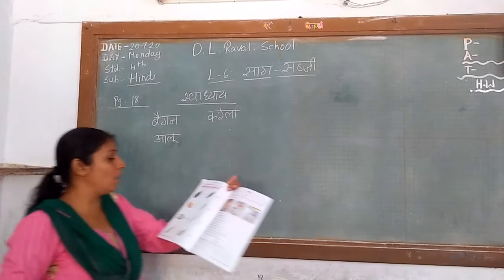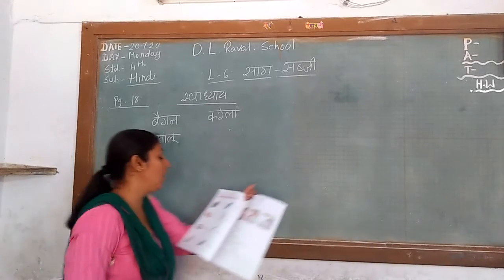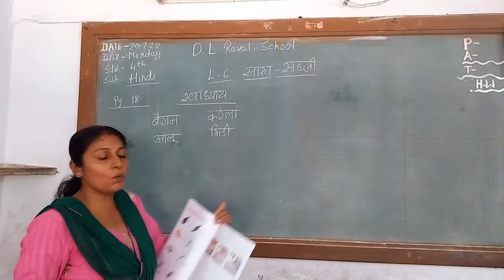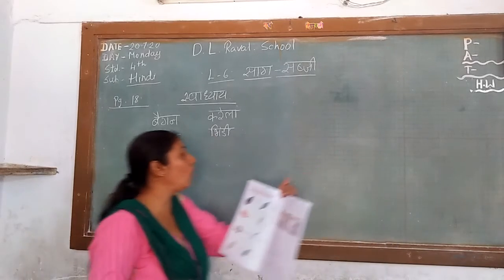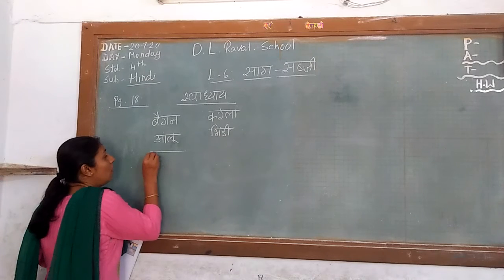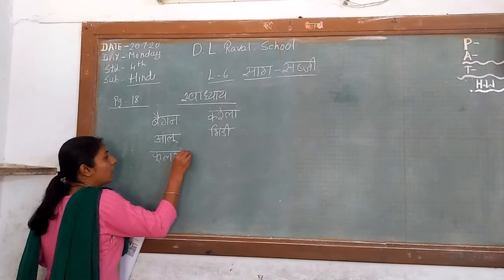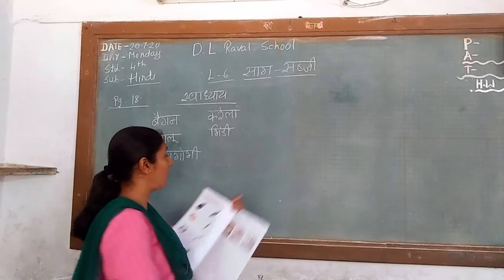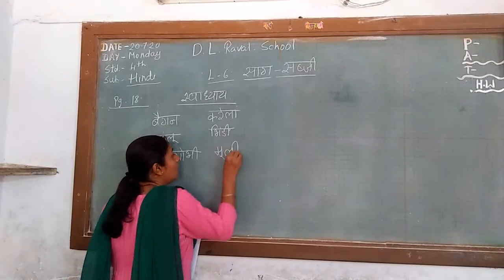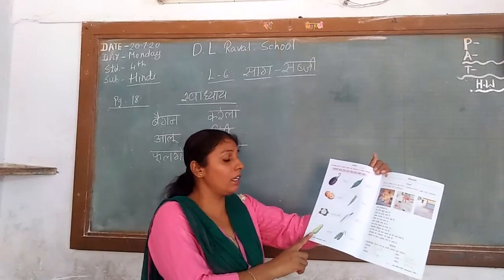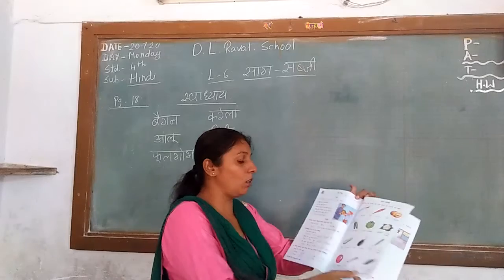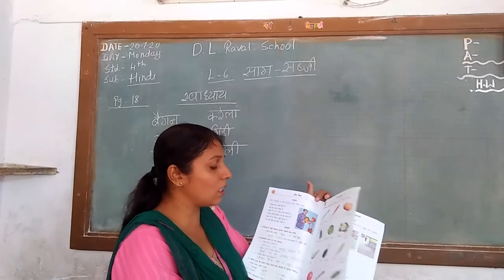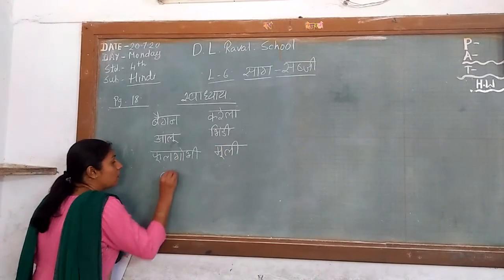Next, Lady's Finger — that is Bhindi. Next is Cauliflower — that is Phool Gobi. Next, Radish — that is Mooli. And Bottle Gourd — that is Lauki.